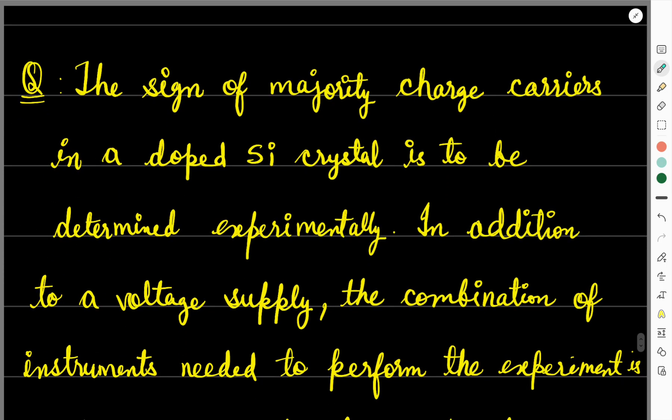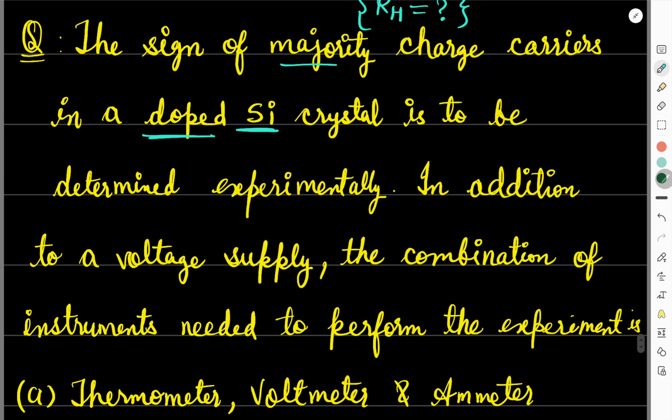Next question: The sign of majority charge carriers in a doped silicon crystal is to be determined experimentally. Here as soon as we see that we need to find the majority charge carriers in silicon, which is a doped silicon crystal, we need to find it. So whenever you have to check whether it's N type semiconductor or P type semiconductor, or to find out the sign of majority charge carriers, you go to the Hall coefficient. R_H will tell you what type of semiconductor we are having.